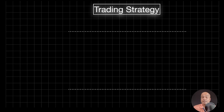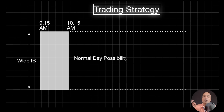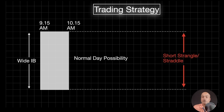Now for the trading strategy — listen carefully. Whenever you get a wide IB, normal day possibility is very high. If you deploy a trend strategy or options buying on such a day, you will definitely lose money because price stays within the same range. The good strategy is a short straddle or short strangle within that range — sell the call option at the higher level and sell the put option at the lower level, with a stop loss or hedge mandatory. You can collect premium from 10:15 to 3:15.